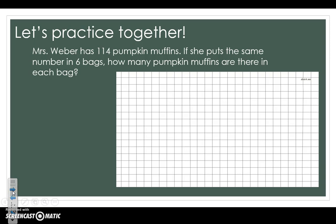Let's do this second one together. It's the same concept. It just simply has a three-digit dividend. Nothing you can't handle. Mrs. Weber has 114 pumpkin muffins. If she puts the same number in six bags, how many pumpkin muffins are there in each bag?